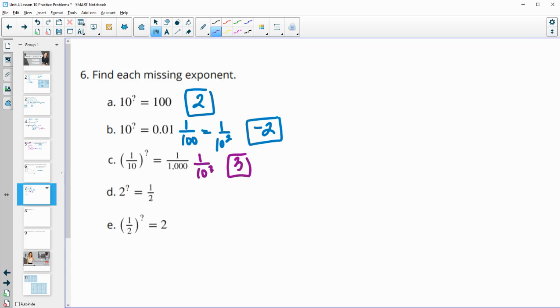2 to what power gives us 1/2? So we can see that these are reciprocals of each other. So this is 1 over 2 to the 1st. So this is going to be negative 1 power. And then again, we can see that this base and this base are reciprocals of each other. So there's a negative exponent happening. And this is going to be negative 1 again.